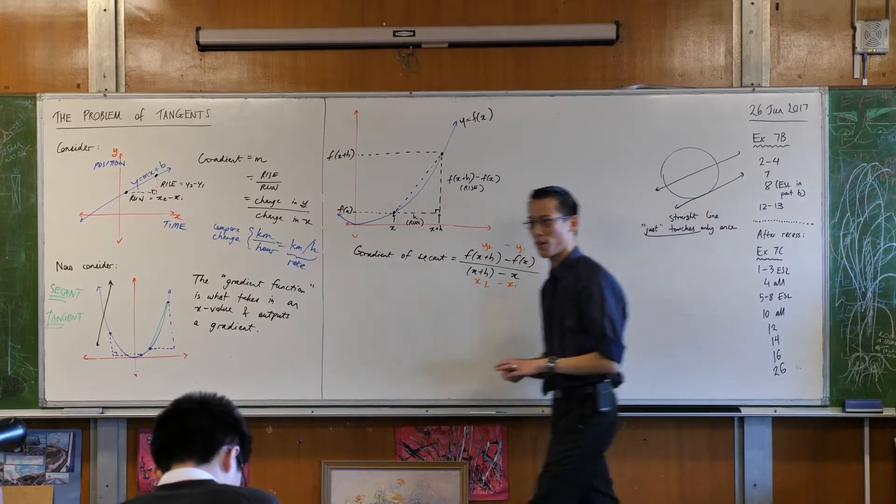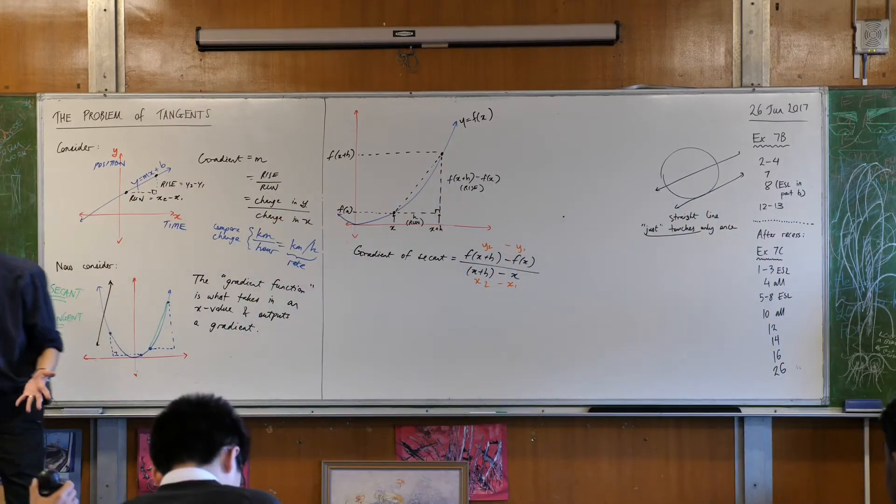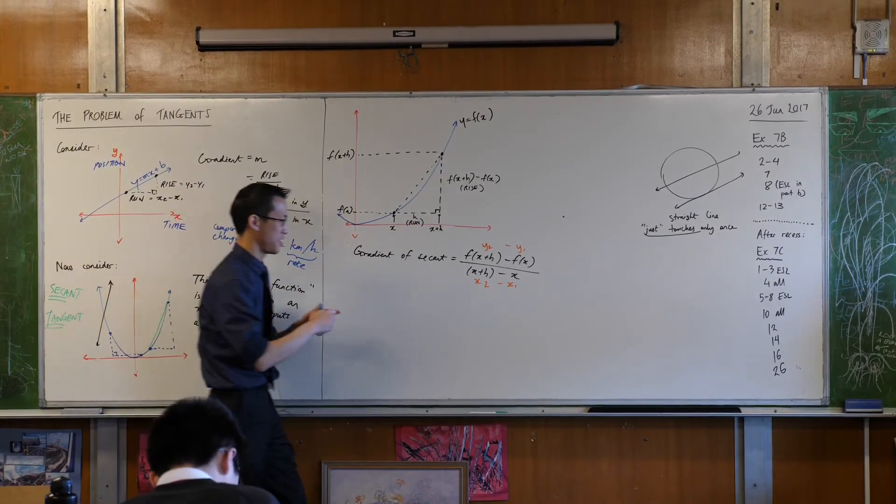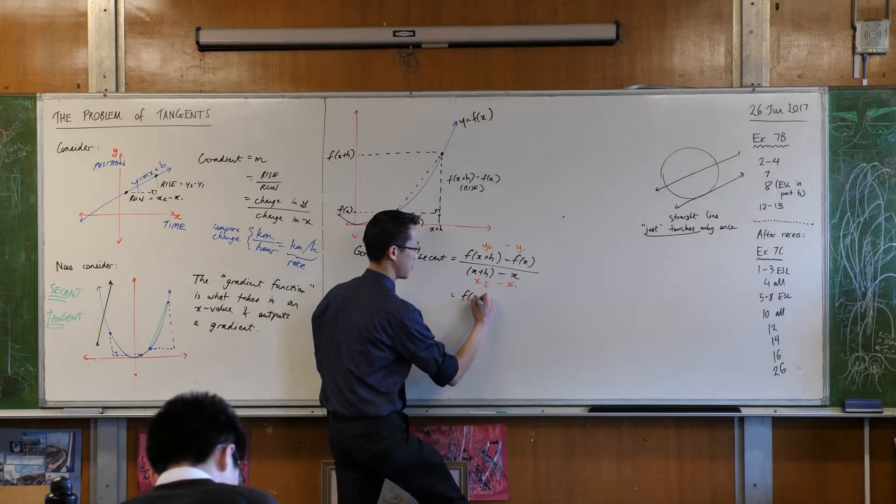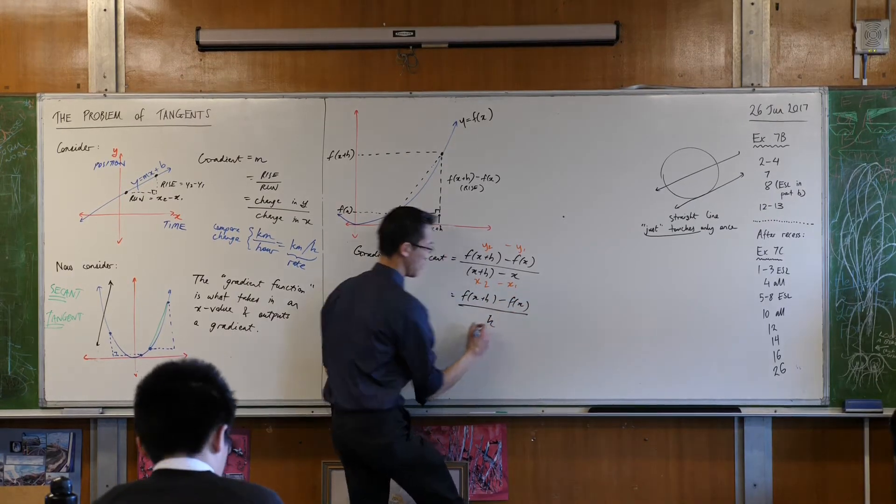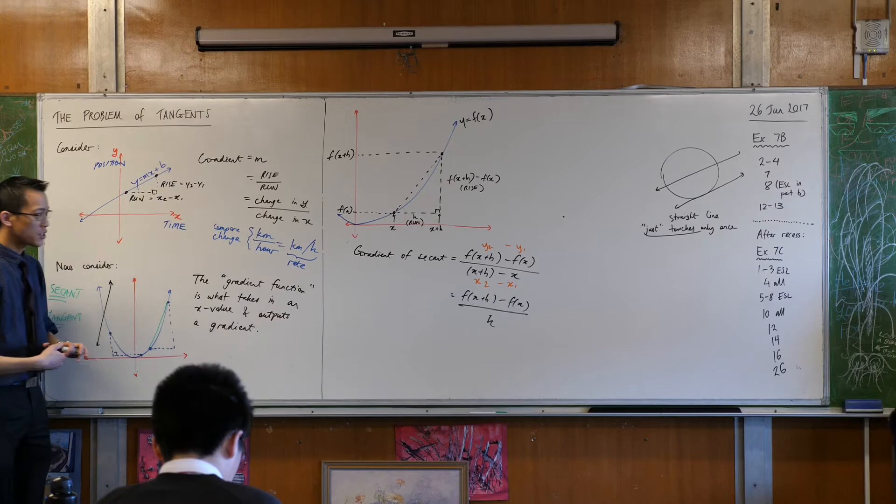It looks fancy because I've been using function notation, but it's just gradient. That's all we're working on. Just like we noticed before, I can simplify the denominator like this. There we go. So what does this mean?